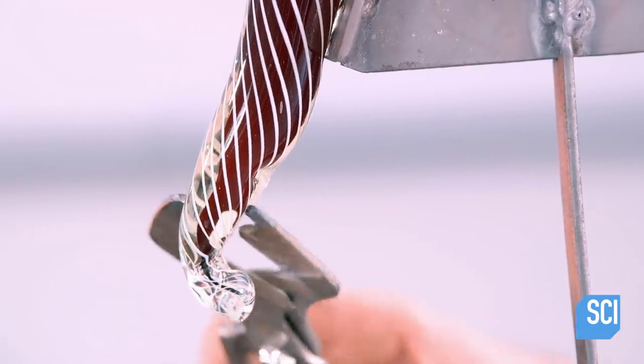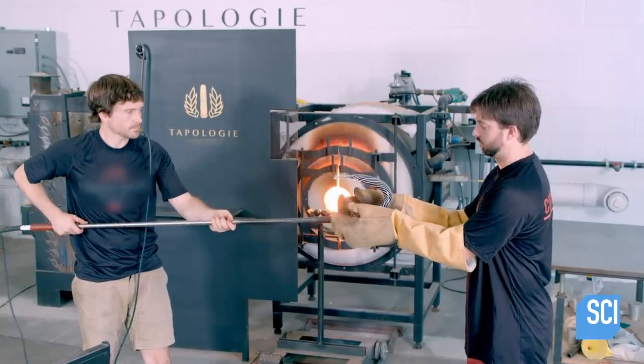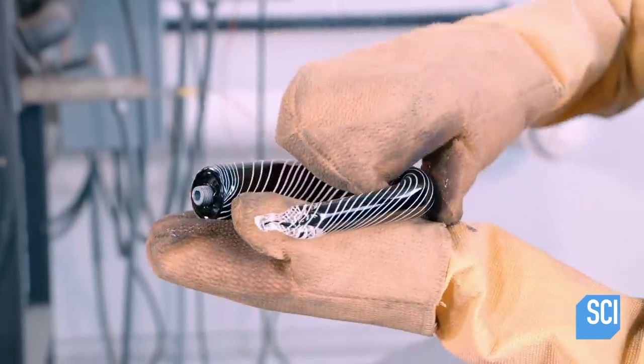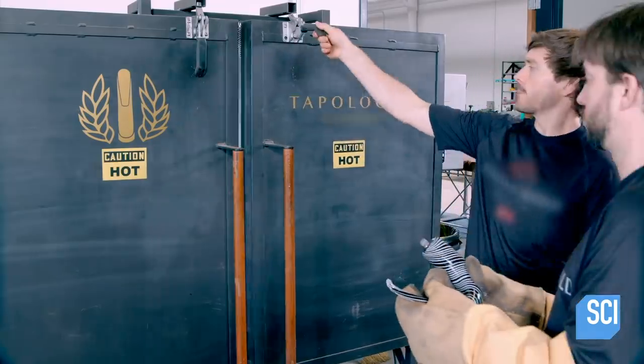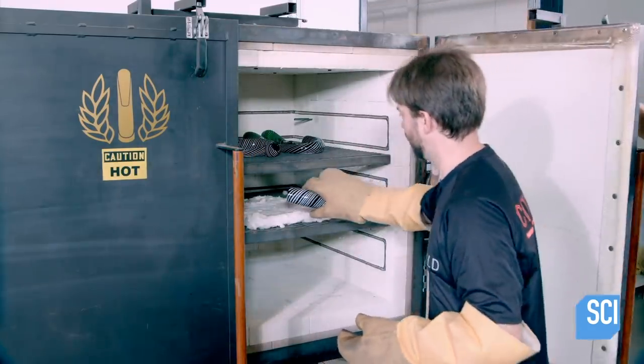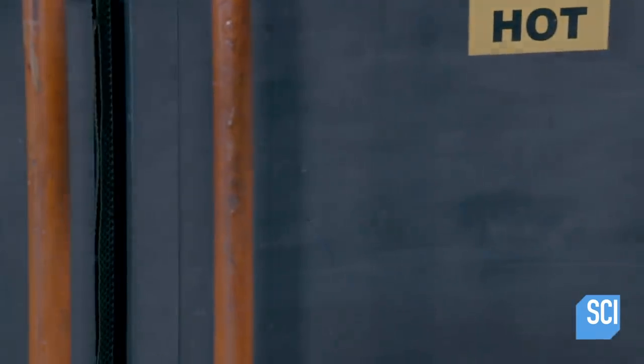Once the faucet has taken shape, it's ready to go into the annealing oven. The glass is placed in the oven at a low temperature and then cooled. This process removes stresses and strengthens the glass.